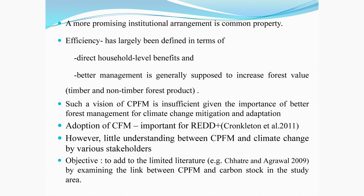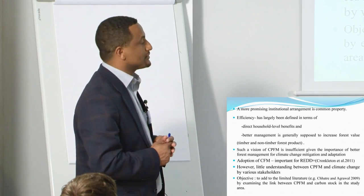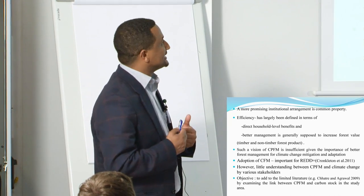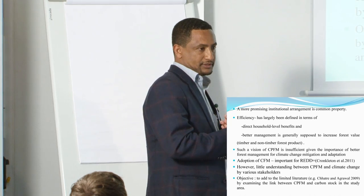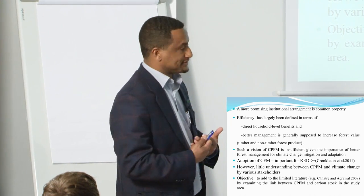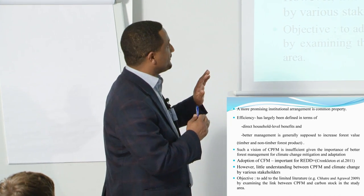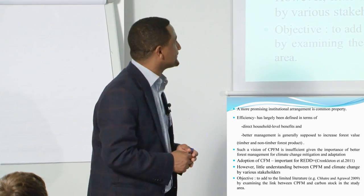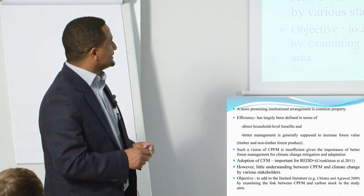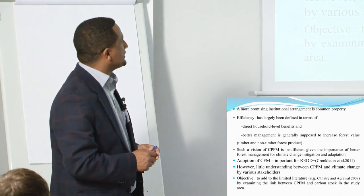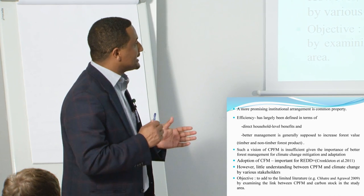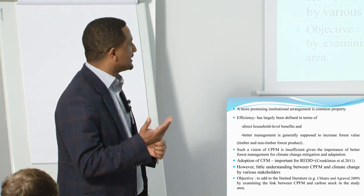It is known that a more promising institutional arrangement is common property, because various literature shows that it is efficient in terms of direct household-level benefits. Better management generally increases the forest value, both timber and non-timber forest products. However, such a vision of common property forest management is insufficient given the importance of better management for climate change. Some studies show that adoption of community forest management is important for REDD, but there is still little understanding between CPFM and climate change among various stakeholders.